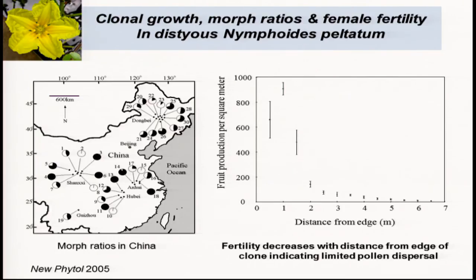Even in populations where there are two morphs, patterns of fertility are affected by clone size. Pollen brought in by bees tends to pollinate flowers around the edge of the clone, and many flowers in the center of the clone do not receive sufficient pollination. As clone size gets bigger, more and more flowers fail.